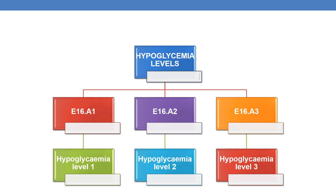Coming to hypoglycemia levels, it is given by E16.A. The final code E16.A1 is given for hypoglycemia level 1, E16.A2 is given for level 2, and E16.A3 is given for level 3.